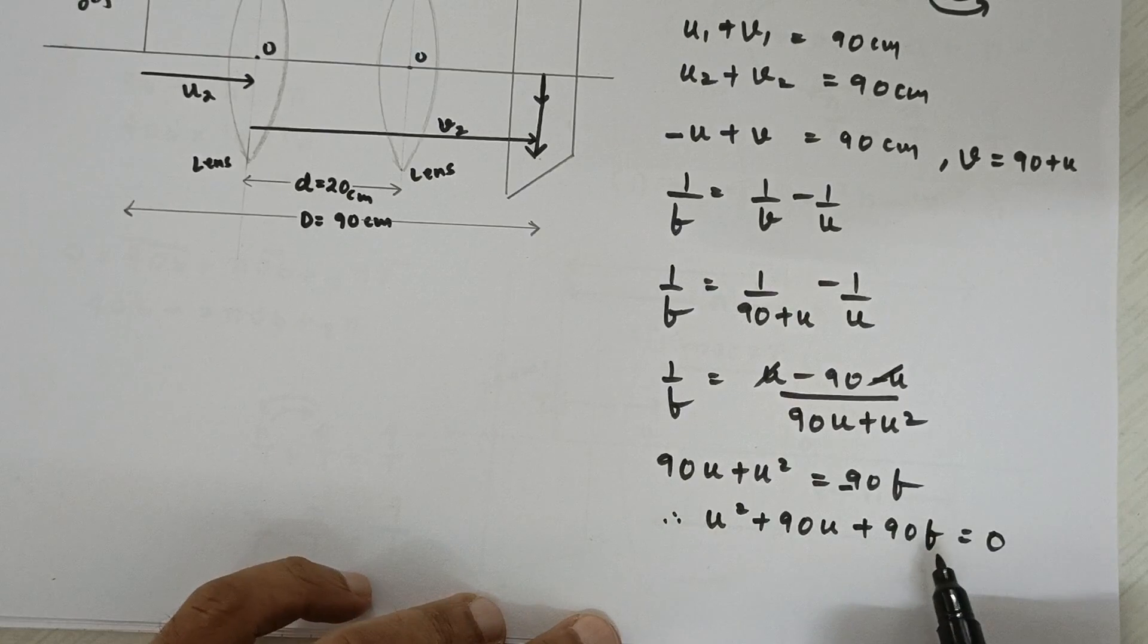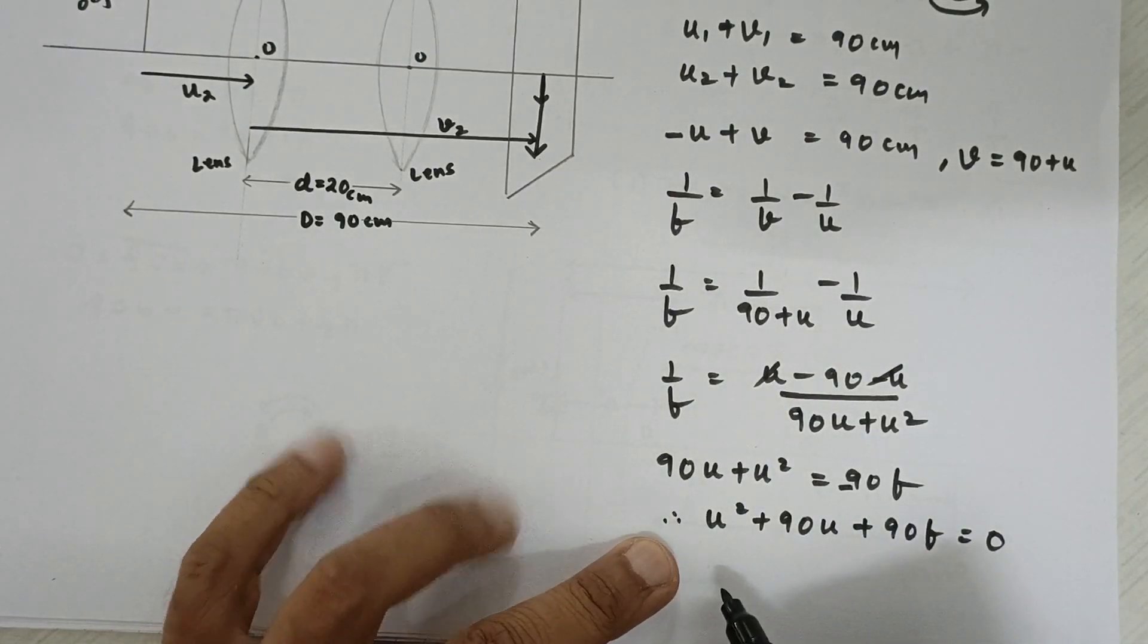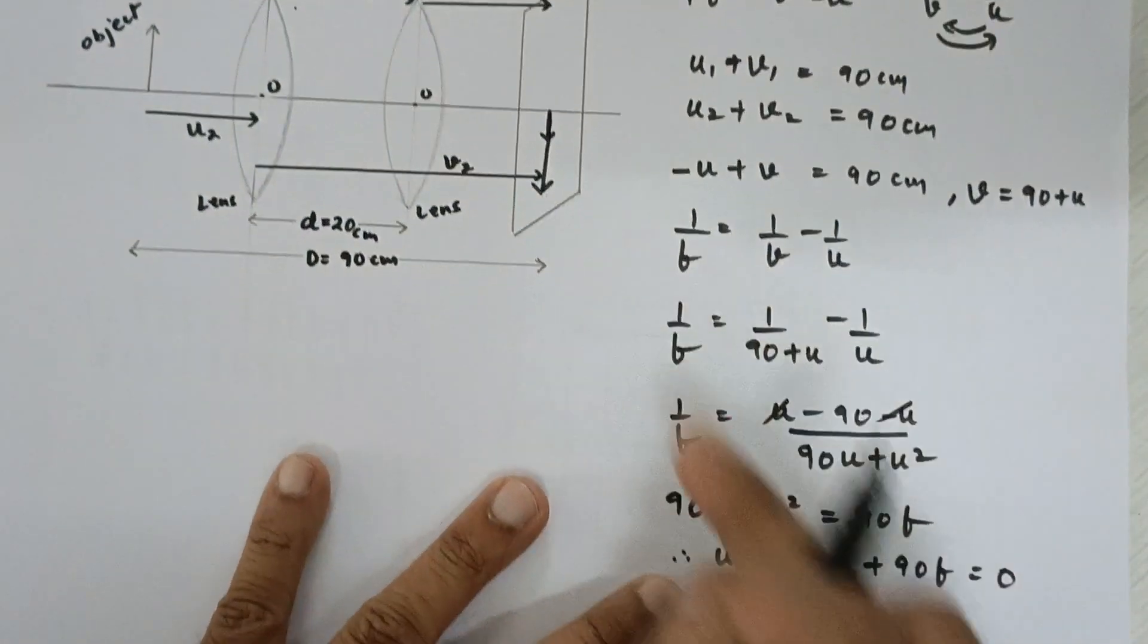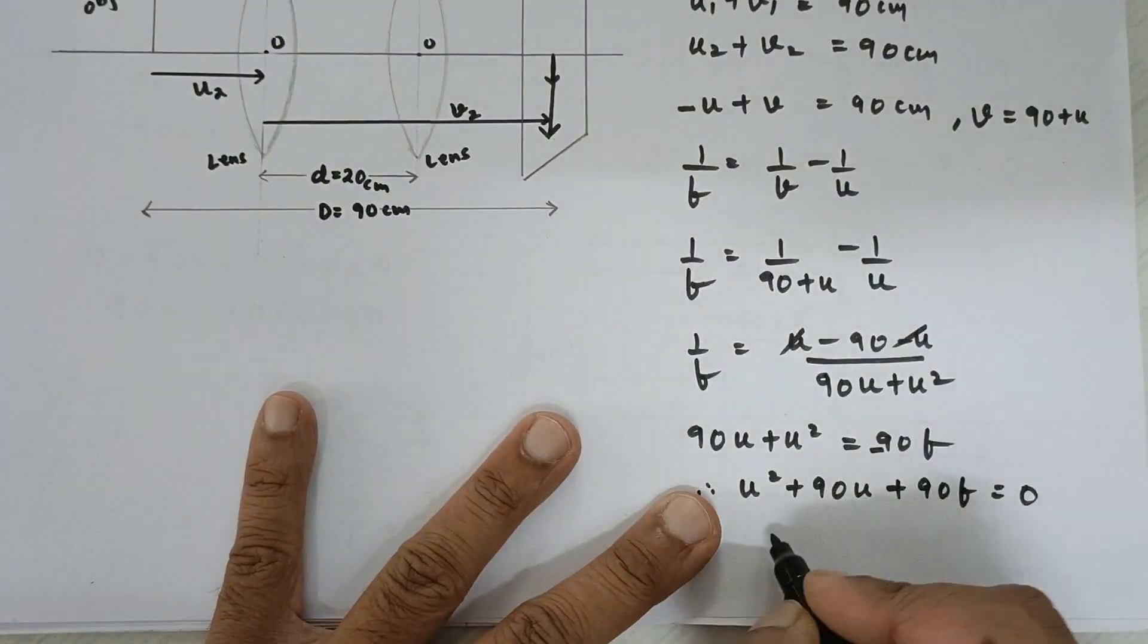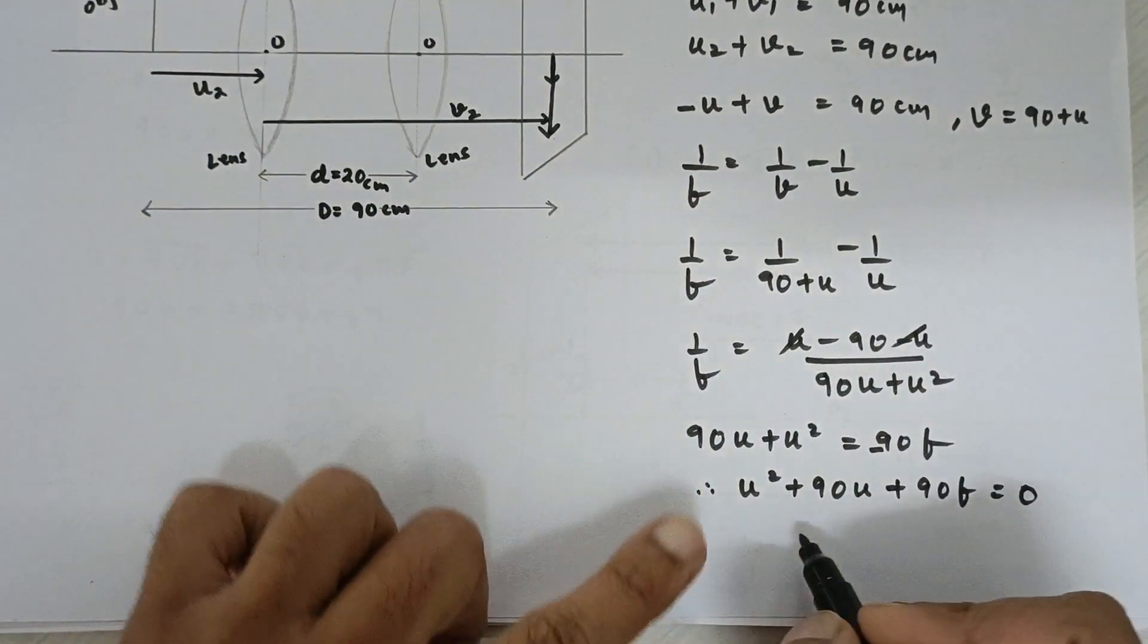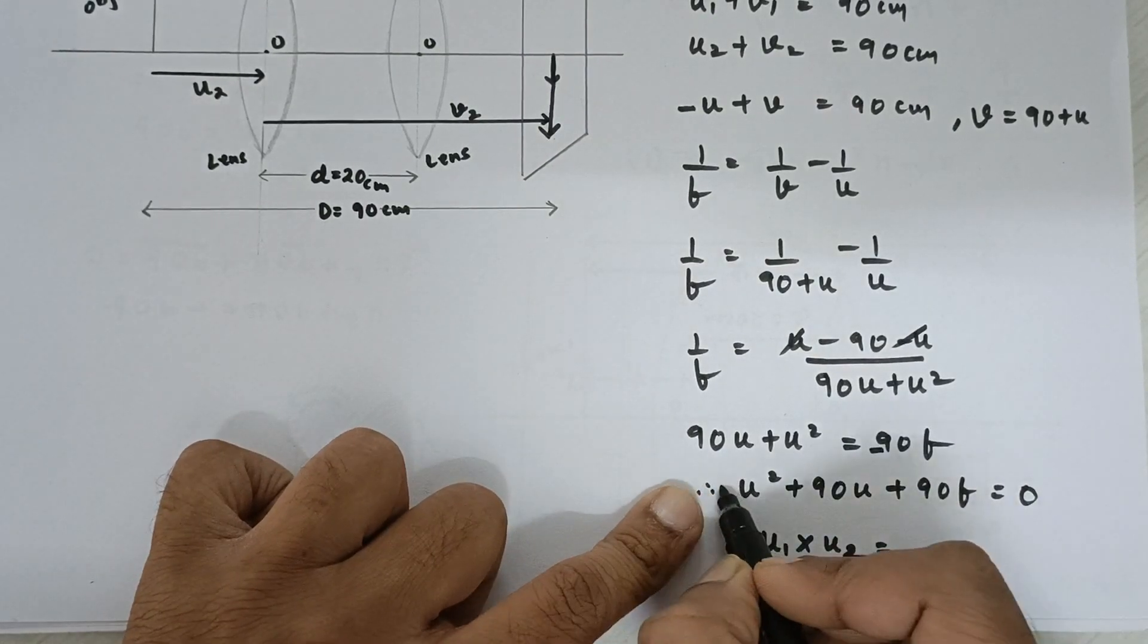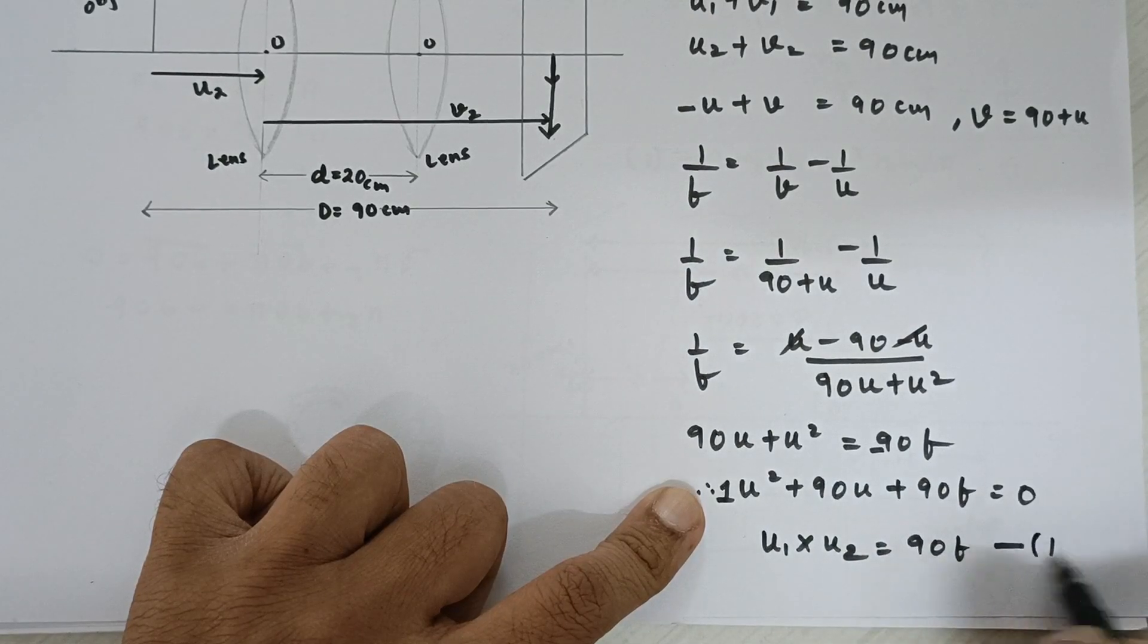now this is the quadratic equation in one variable and you know that there are two solutions that are possible and those solutions will be u1 and u2 because we have assumed the generalized equation like this. So, you will be getting two values of u1 and u2 from here. And by maths we know that u1 multiplied by u2 should be equal to 1 multiplied by 90 f. So, it should be 90 f. This is my first equation.